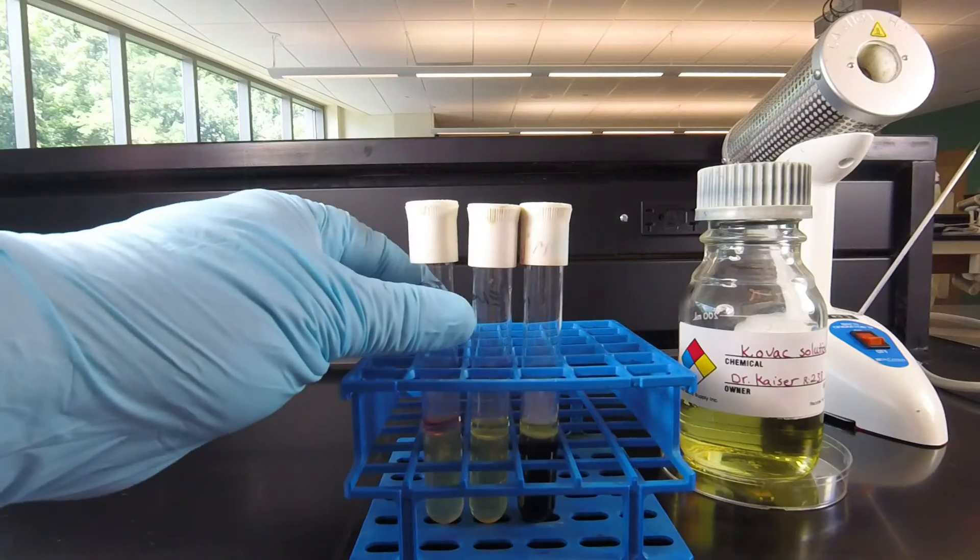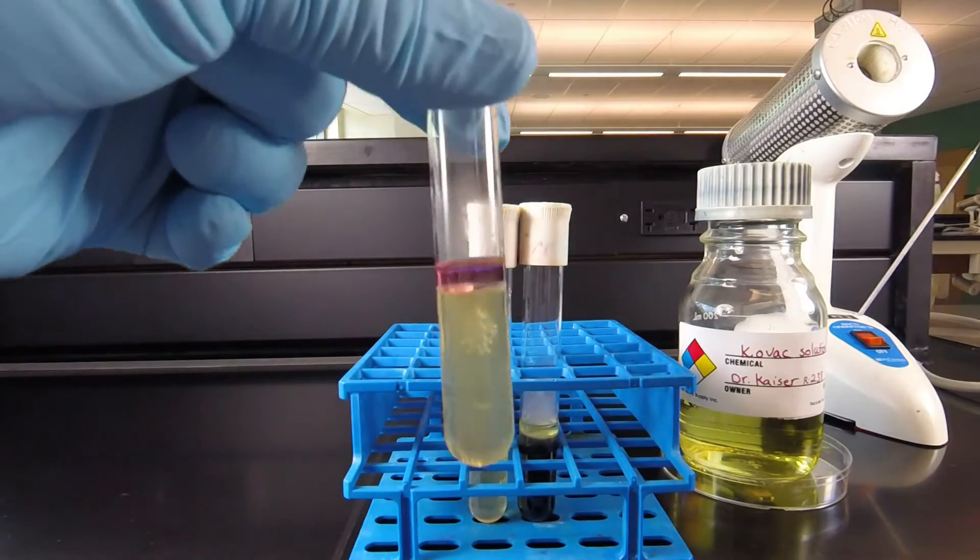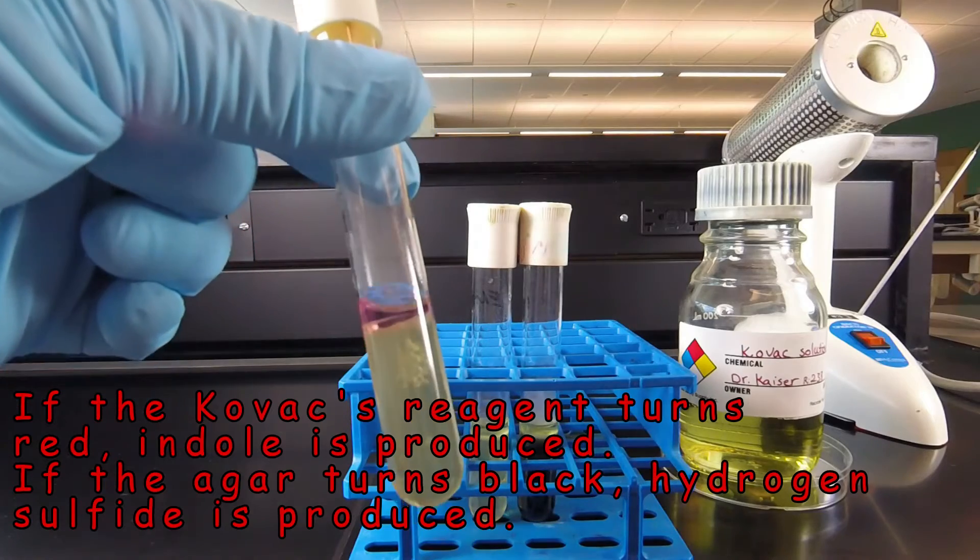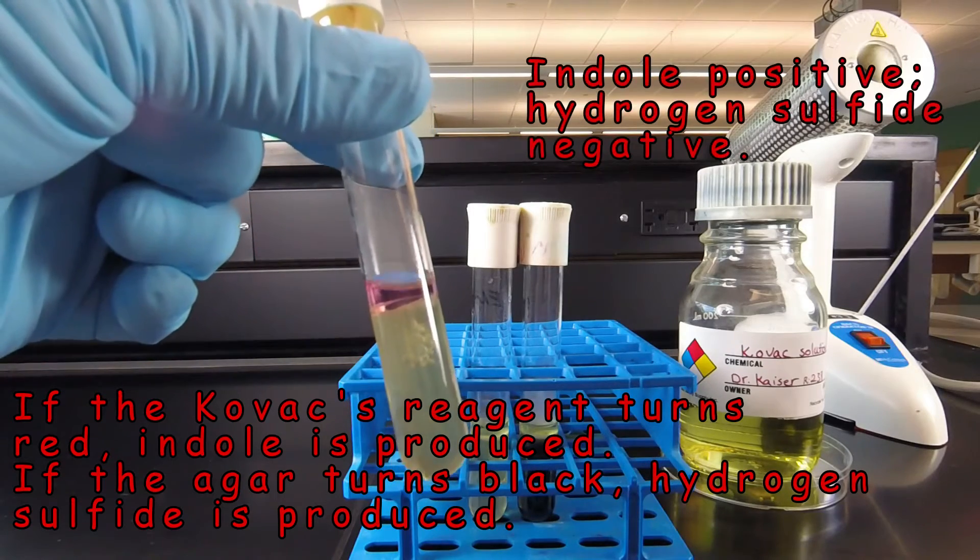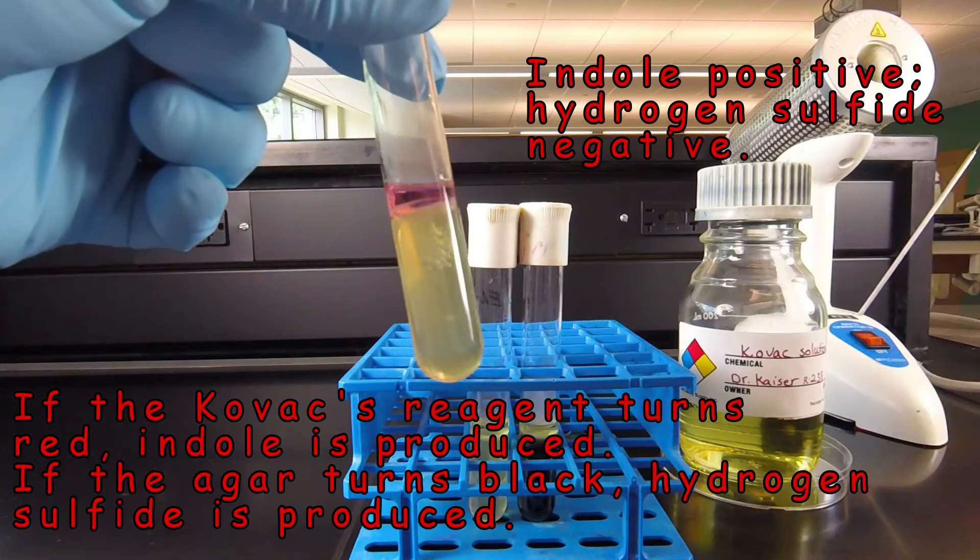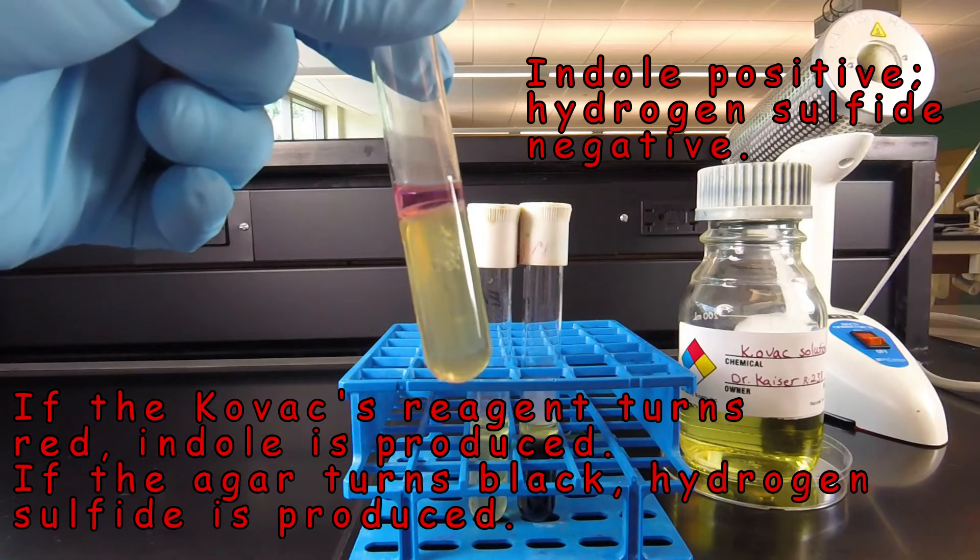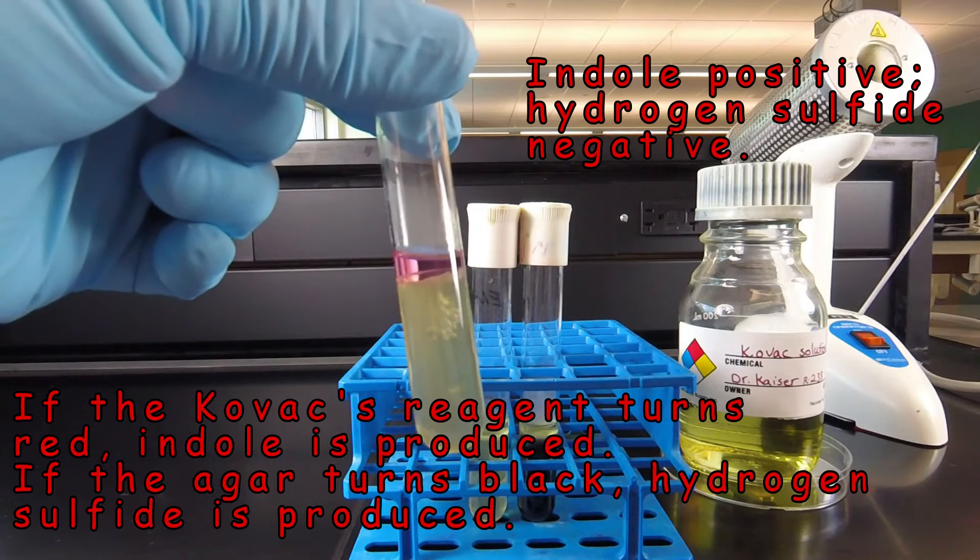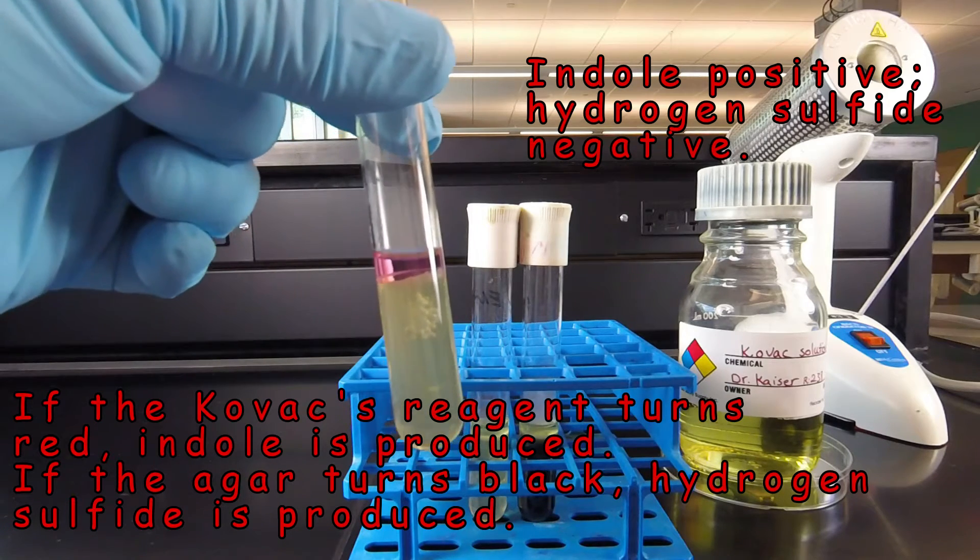Now we're ready to look at the results. In this tube, the Kovac's reagent has turned red, which indicates indole production. But the agar has not turned black, which indicates that hydrogen sulfide was not produced. So this bacterium is indole positive and hydrogen sulfide negative.